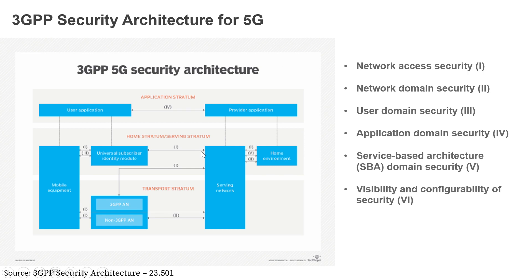The transport stratum covers how the interconnectivity between network elements is done — the transport mechanism at the TCP/UDP layer, how backhauling is done, how your network extends traffic to the internet, and how you maintain the transport layer from a security standpoint. These are the different stratums. You can then subdivide each stratum into different parts. For example, network access security covers how your UE gets access to the network — whether 3GPP or non-3GPP access and how authentication is exchanged. Network domain security covers how the control plane and user plane maintain security and interact with each other.